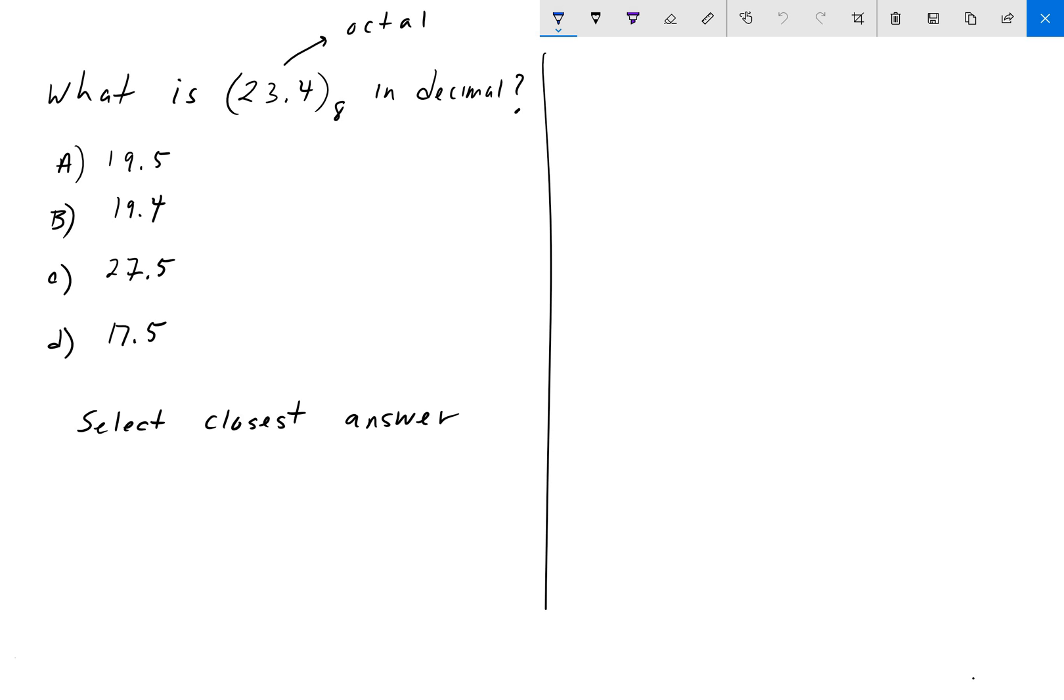To solve this, there are a few different ways, but the way I did it was I found 23 octal in decimal, and then I just took the average of the two.